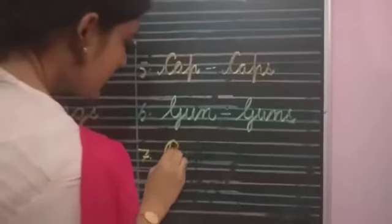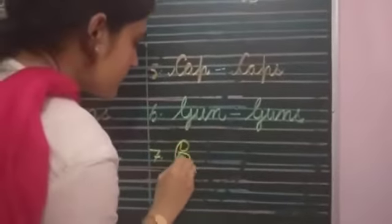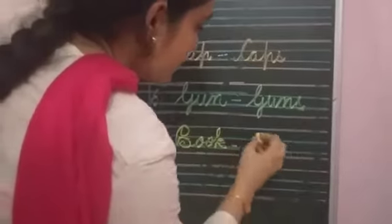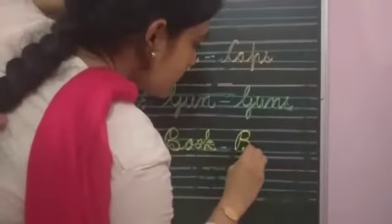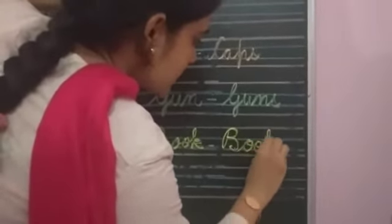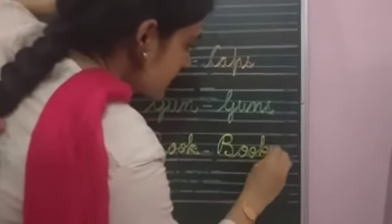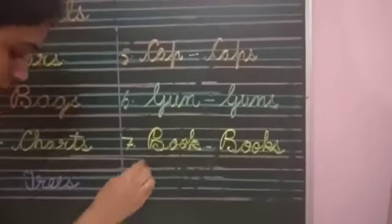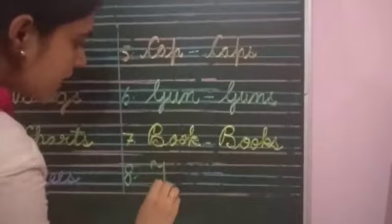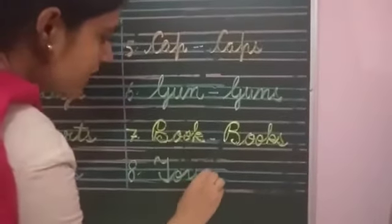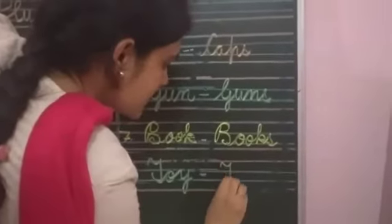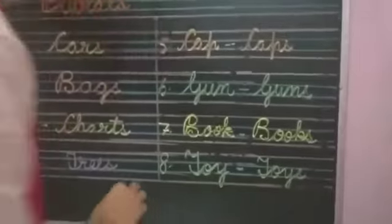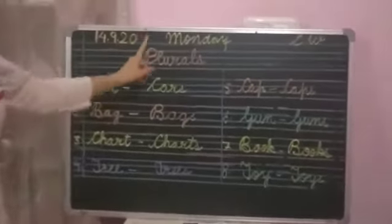Number seven is book. What is the plural of book? Books. One book, many books. Now number eight. Toy. What is the plural of toy? Yes. Toys. One toy, many toys. Have you done?